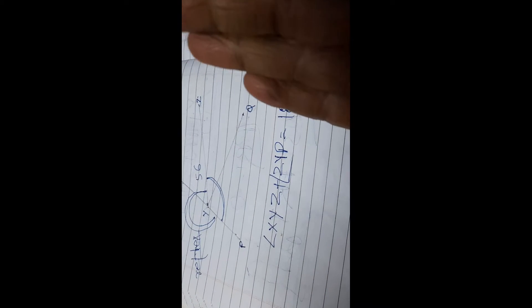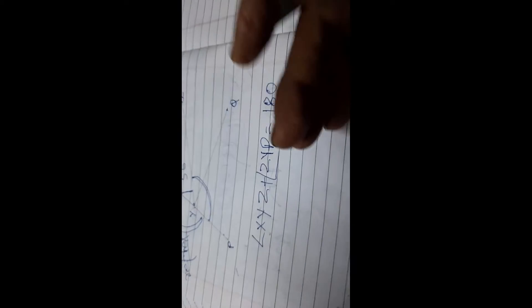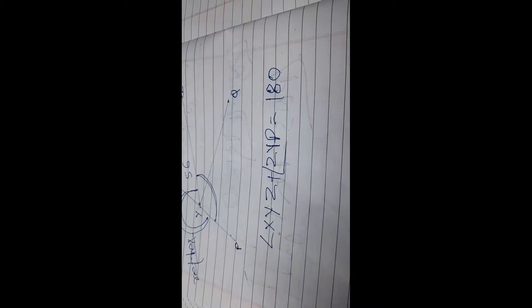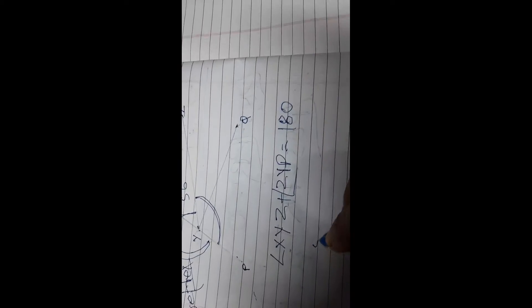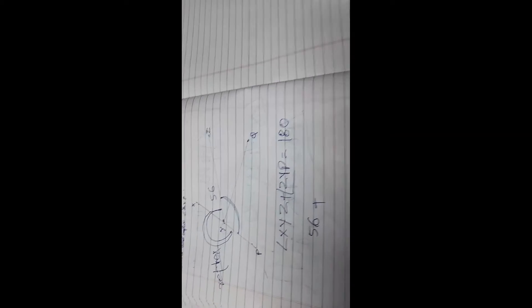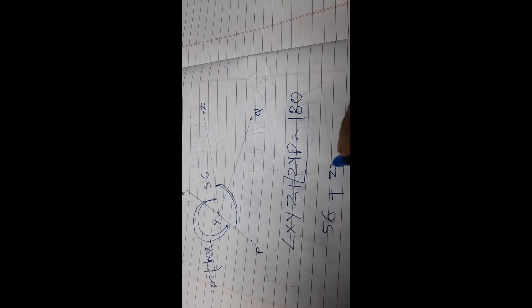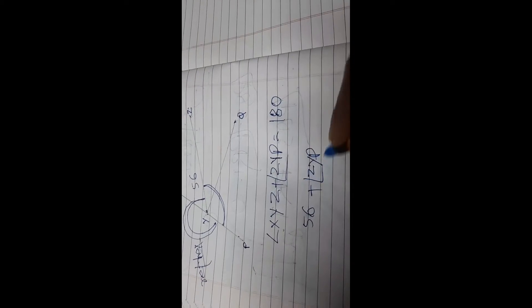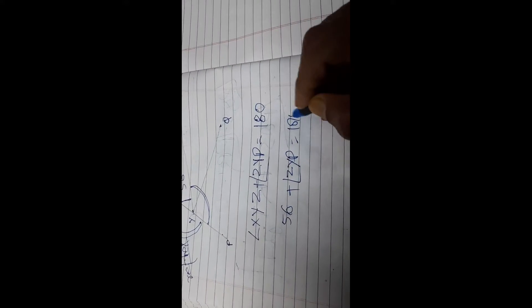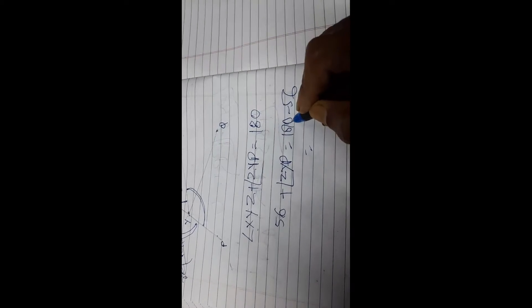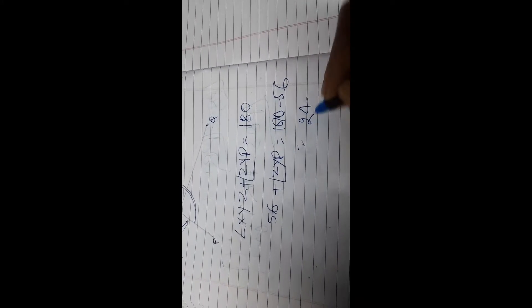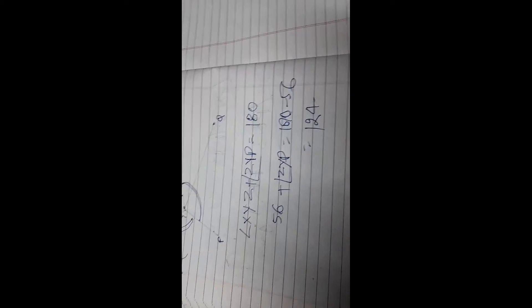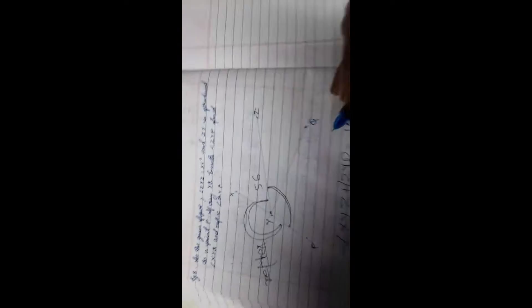Because you have already proved that the sum of angles on a point of a straight line to the same side make 180. This was theorem one. So XYZ value is 56, and ZYP equals 180 minus 56, which is 124.